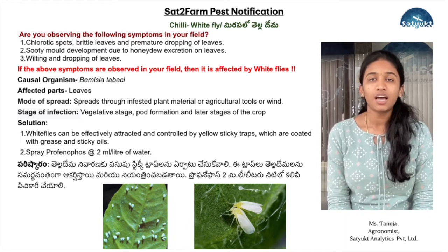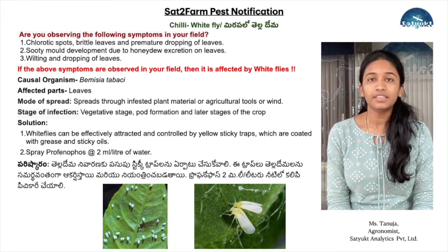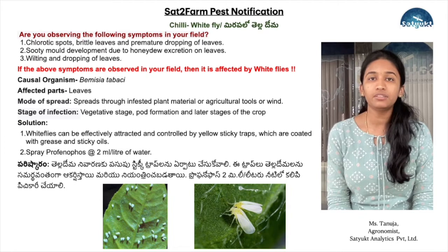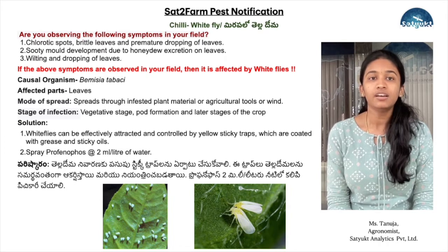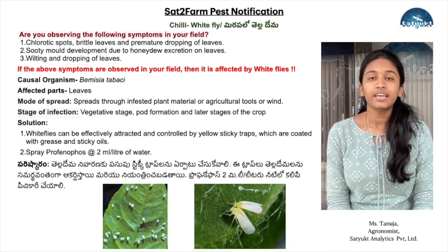Dear chili growers, are you observing any of the following symptoms like chlorotic leaves, brittle leaves, and premature dropping of leaves, along with sooty mold development due to honey secretion, and wilting and dropping of the leaves?